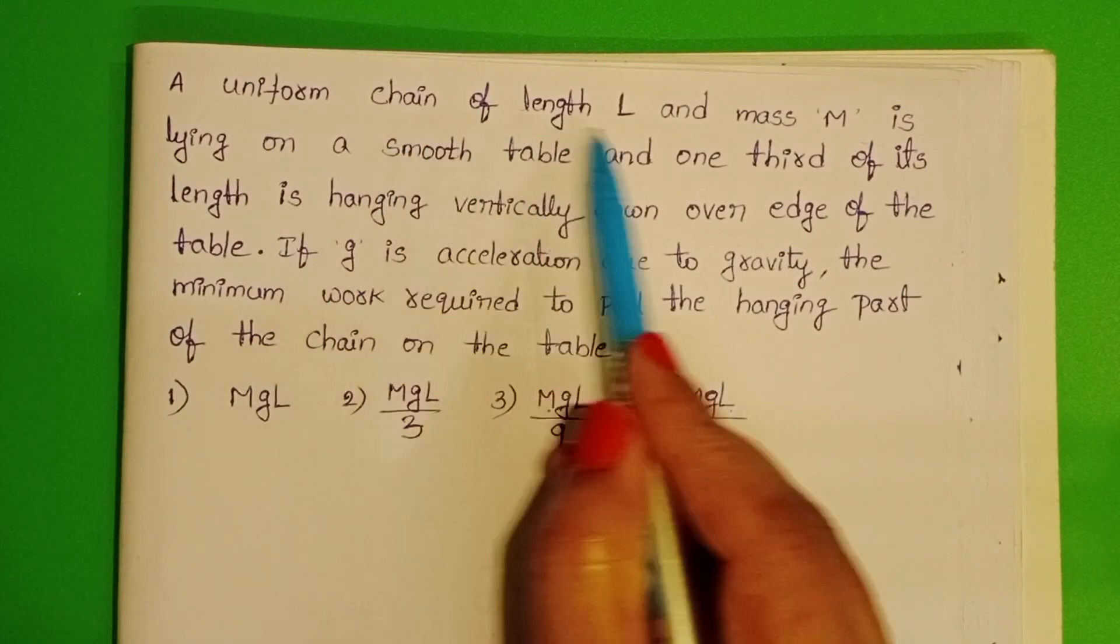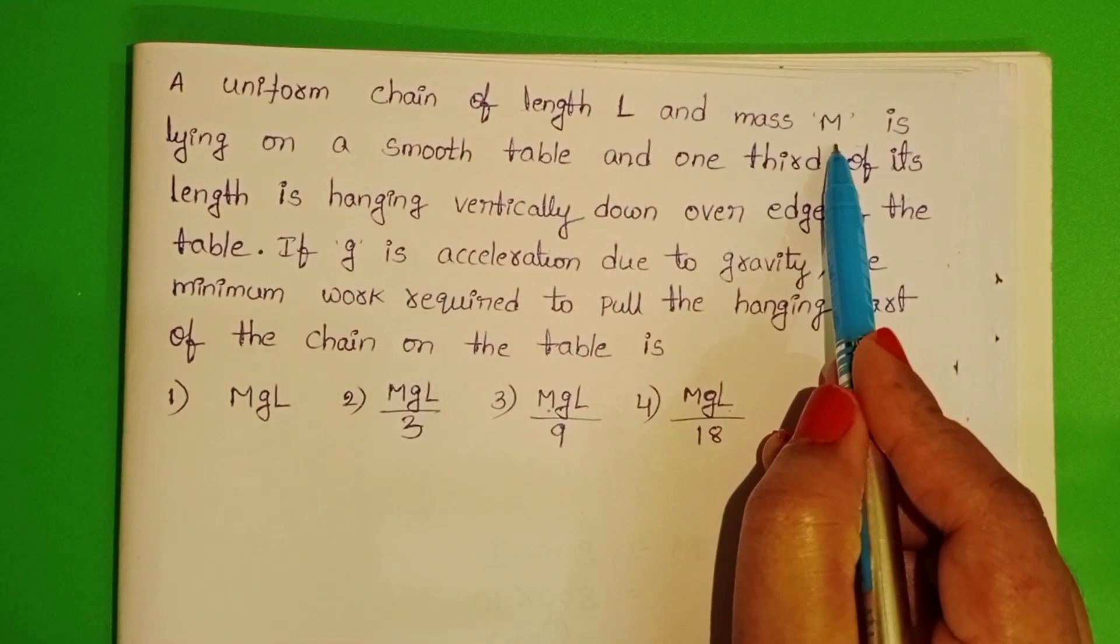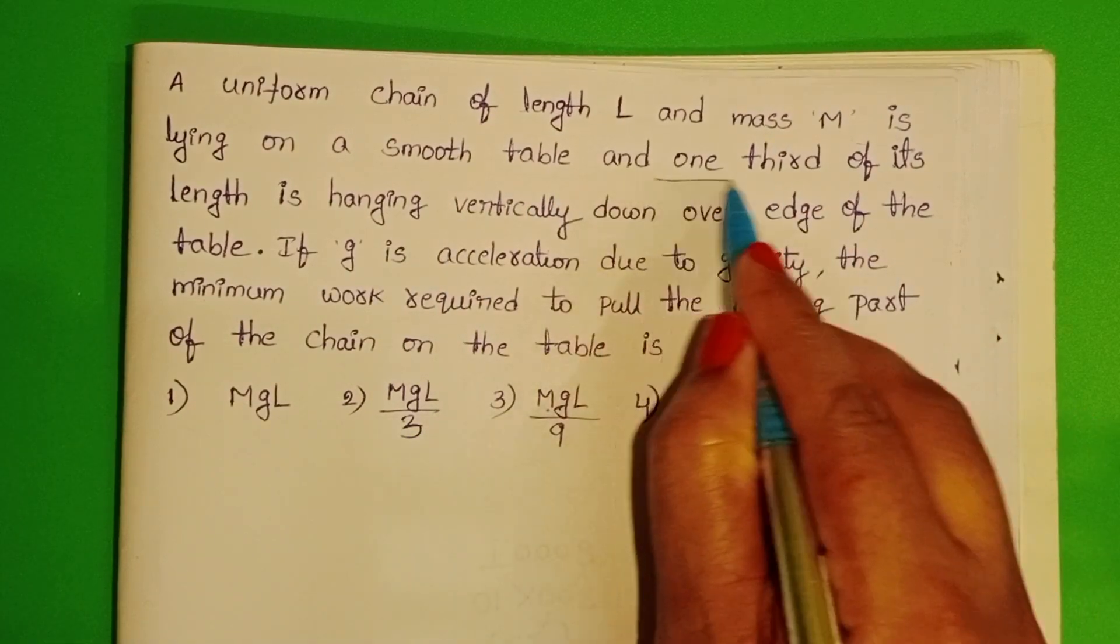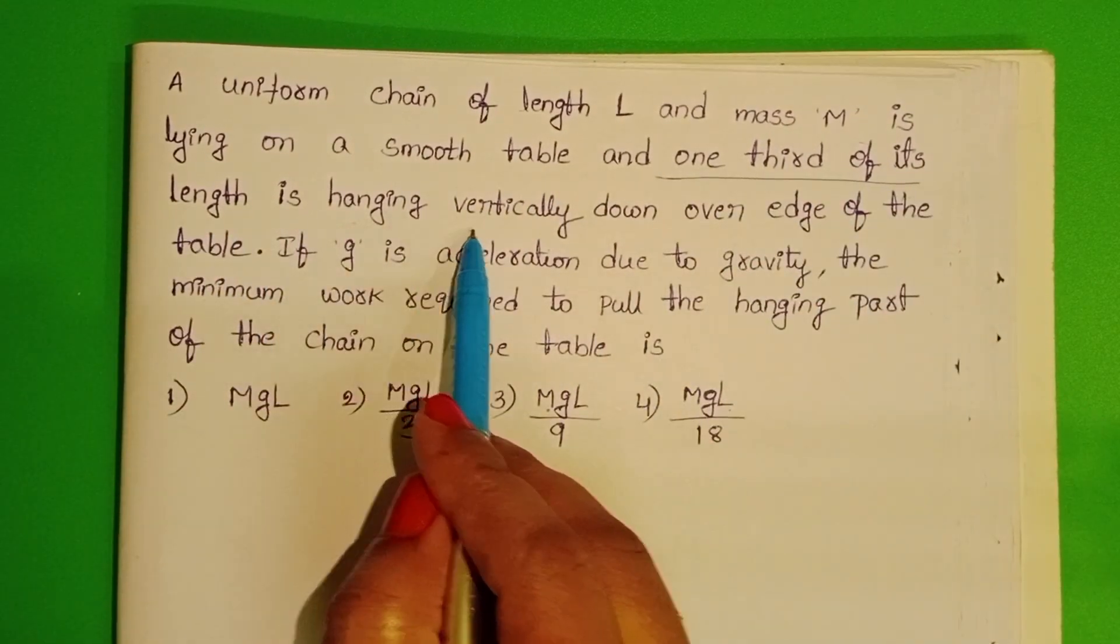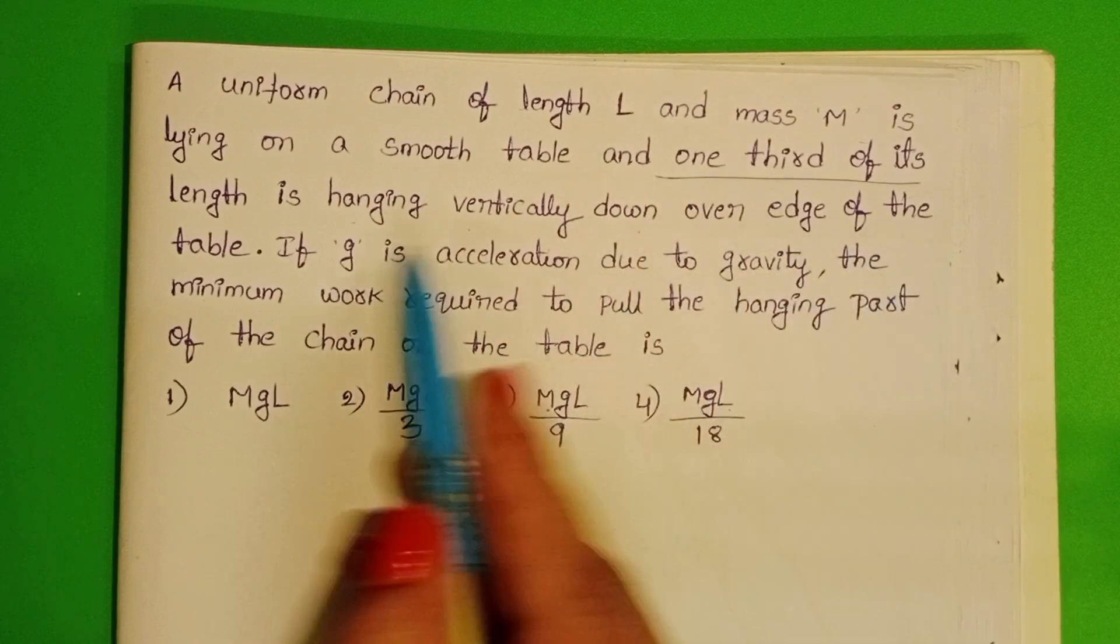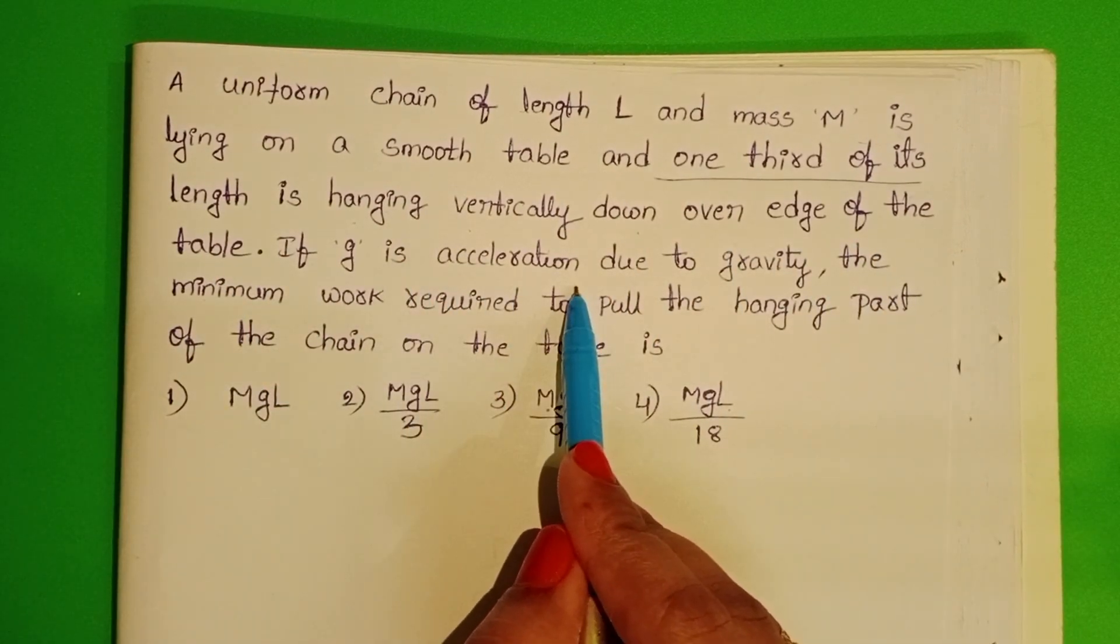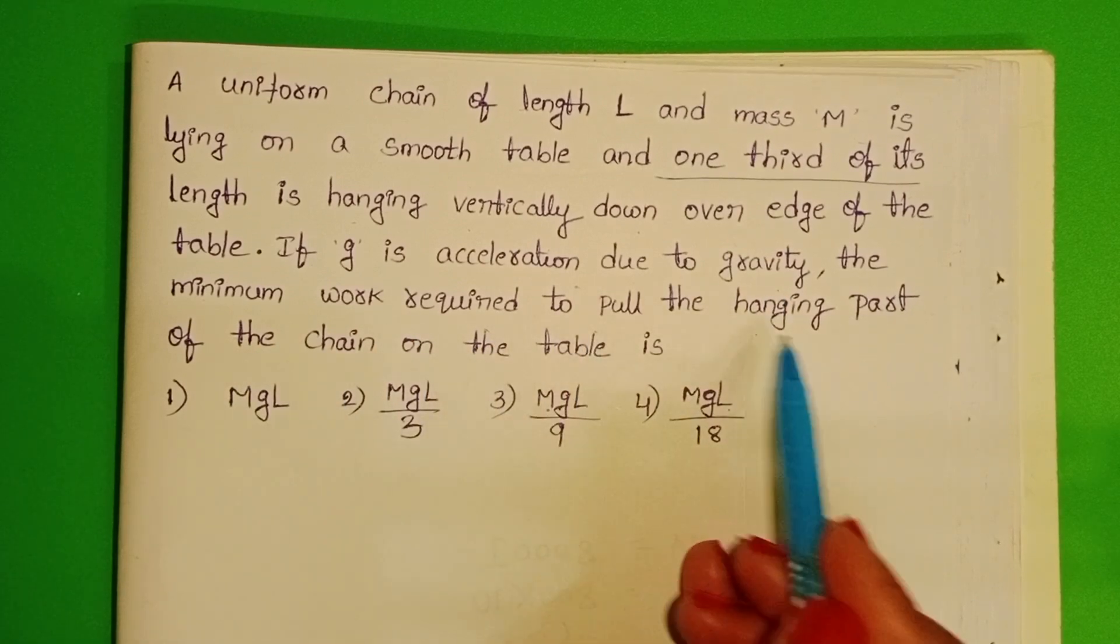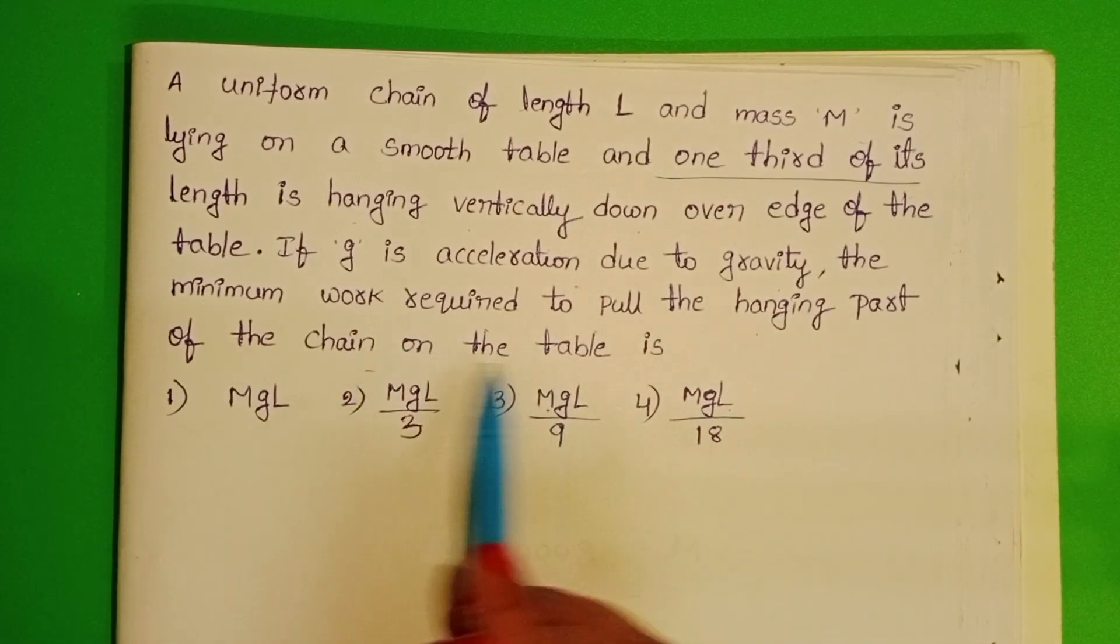A uniform chain of length L and mass M is lying on a smooth table and one third of its length is hanging vertically down over the edge of the table. If g is acceleration due to gravity, the minimum work required to pull the hanging part of chain on the table is: